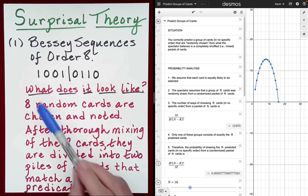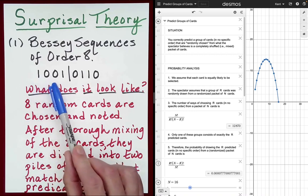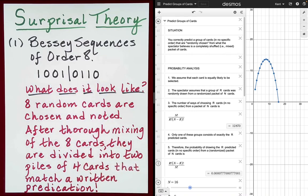Now recall that the quintessential structure for a Bessey sequence is the following: 1, 0, 0, 1, 0, 1, 1, 0, where the 0s and 1s are simply denoting dichotomous characteristics, or we view those cards as having dichotomous characteristics.